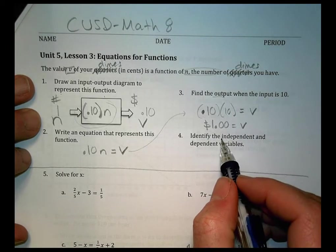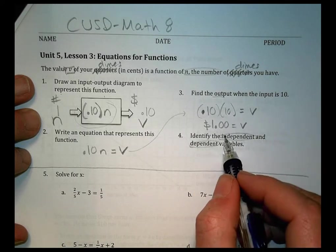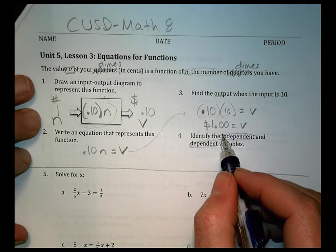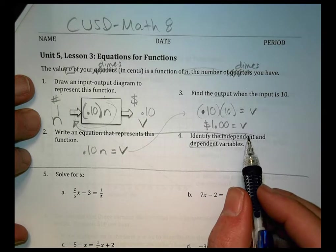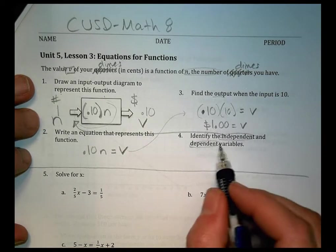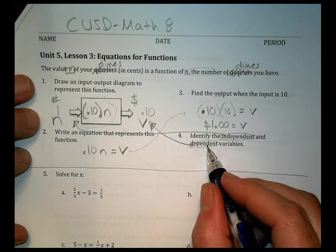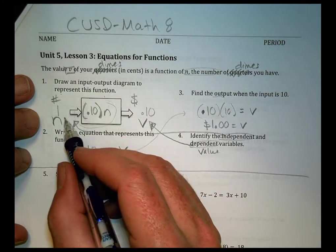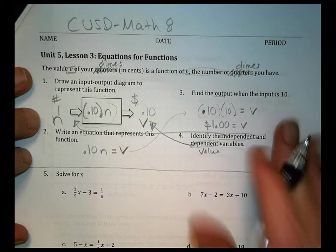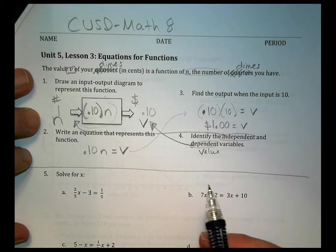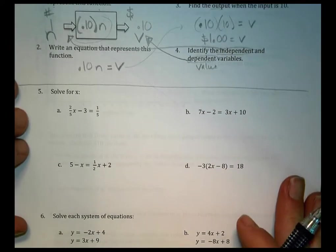Now in our case here, we're looking at our independent and our dependent value. The independent value is going to be what you put into the machine, the function input-output diagram. The dependent one is going to be what you get out of it, because our value depends on how many dimes there are. So that's an example of what you do if we're talking about dimes. In your case, you're going to be looking at quarters, so you can solve that one using this as a help.